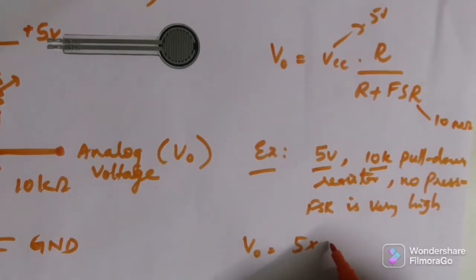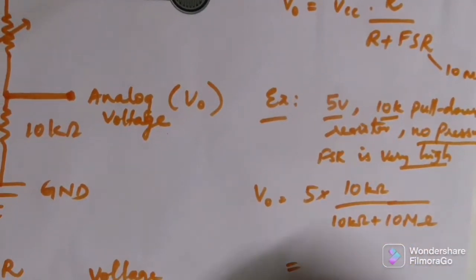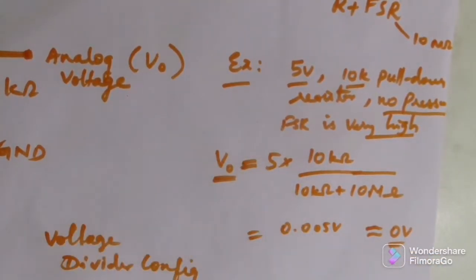So 5 into, the resistance is 10K ohms, divided by 10K ohms plus, as I said there is no pressure. Obviously, it is considered as 10M ohms. So almost 0.005 volts. Almost no pressure, 0 volts. Correct? This is when you apply no pressure.